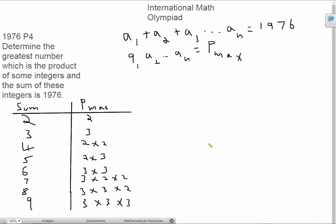Hi all, today we're going to be doing a problem from the International Math Olympiad. It's question number 4 from the year 1976. The question states: determine the greatest number which is the product of some integers, and the sum of these integers is 1976, same as the year.